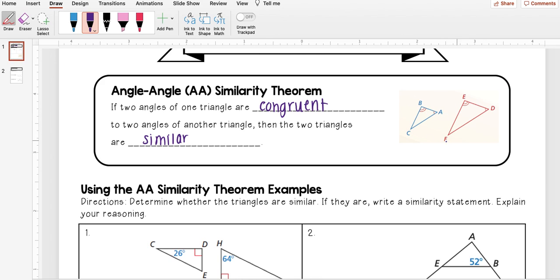And so I can actually write a similarity statement from here. That would look like ABC similar to triangle... And then I need to make sure I do the correct order here. So A is congruent to D, so I need to make sure that's the first letter. B is congruent to E, so I need to make sure that's the second letter. And then that just leaves F.